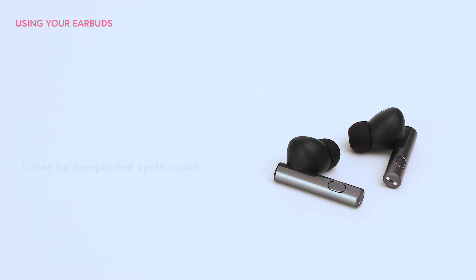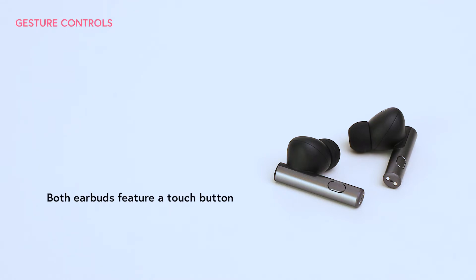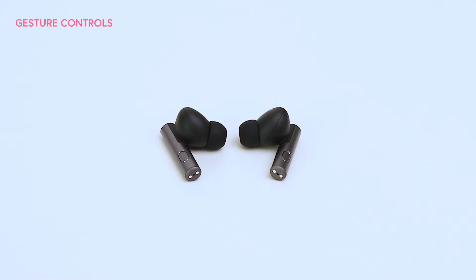Place earbuds in your ears and listen for a low-pitched synth sound that indicates the device is ready to be used. Both earbuds have a button located on the outside lower end of the bar, giving you direct access to gesture controls.